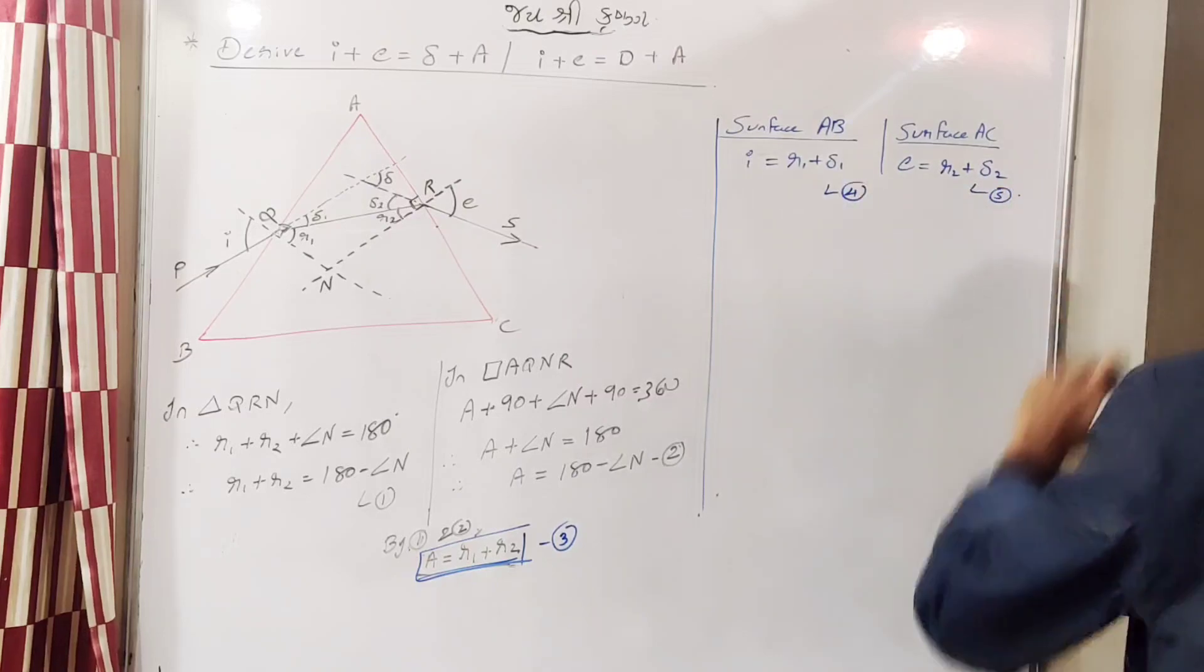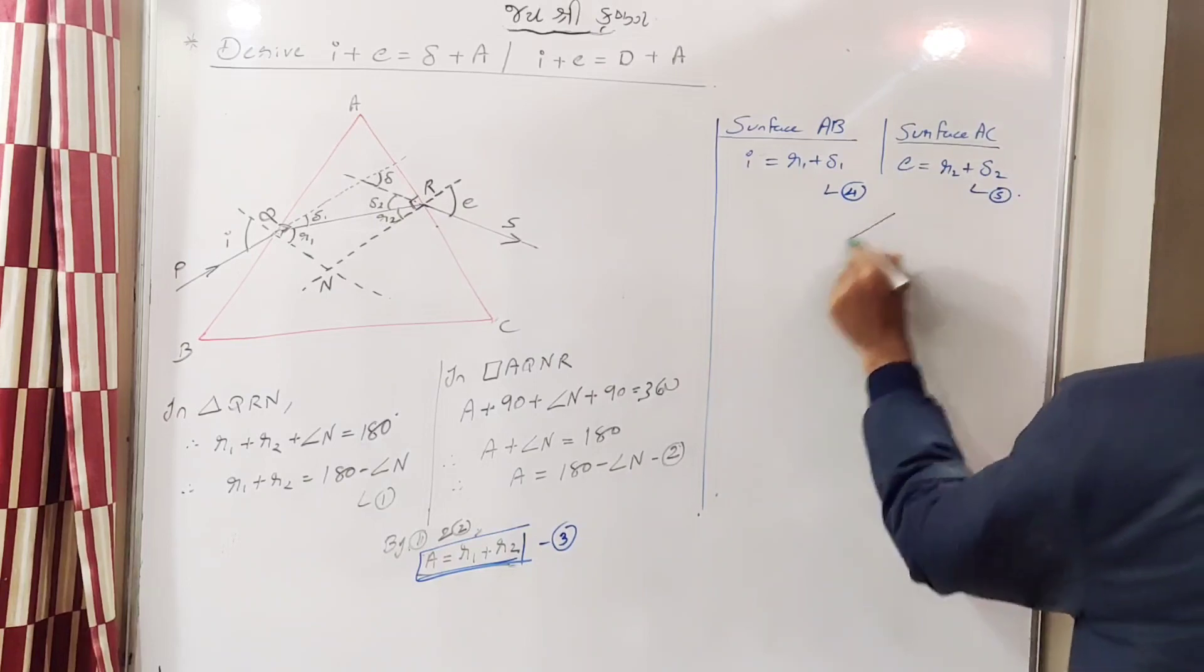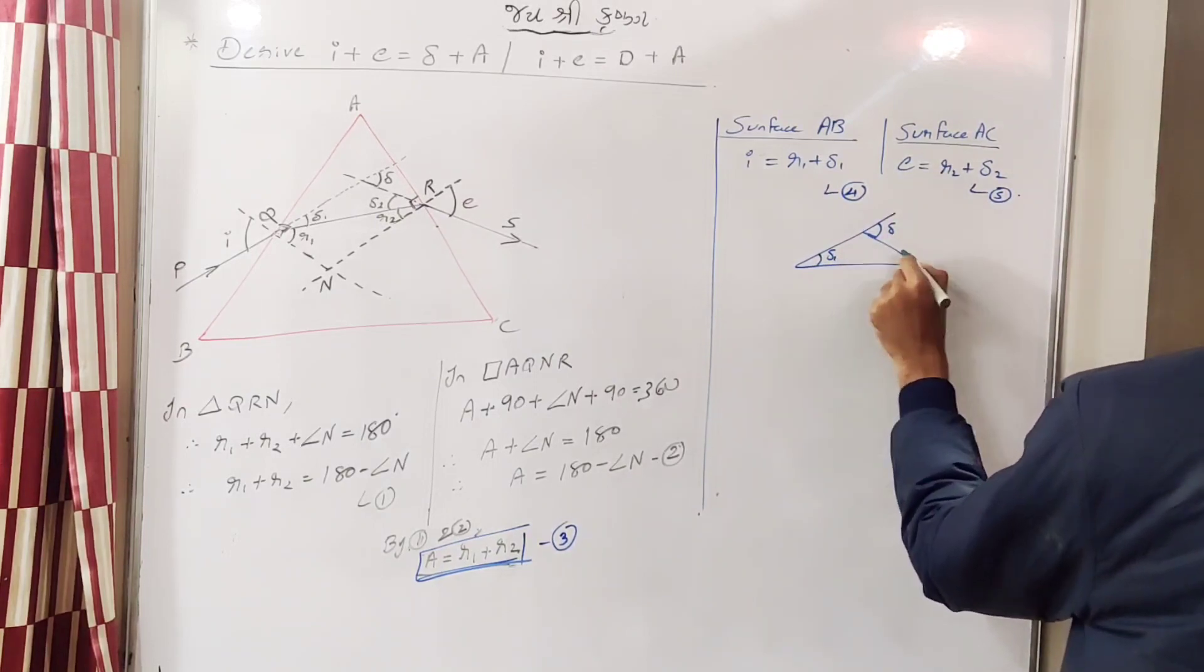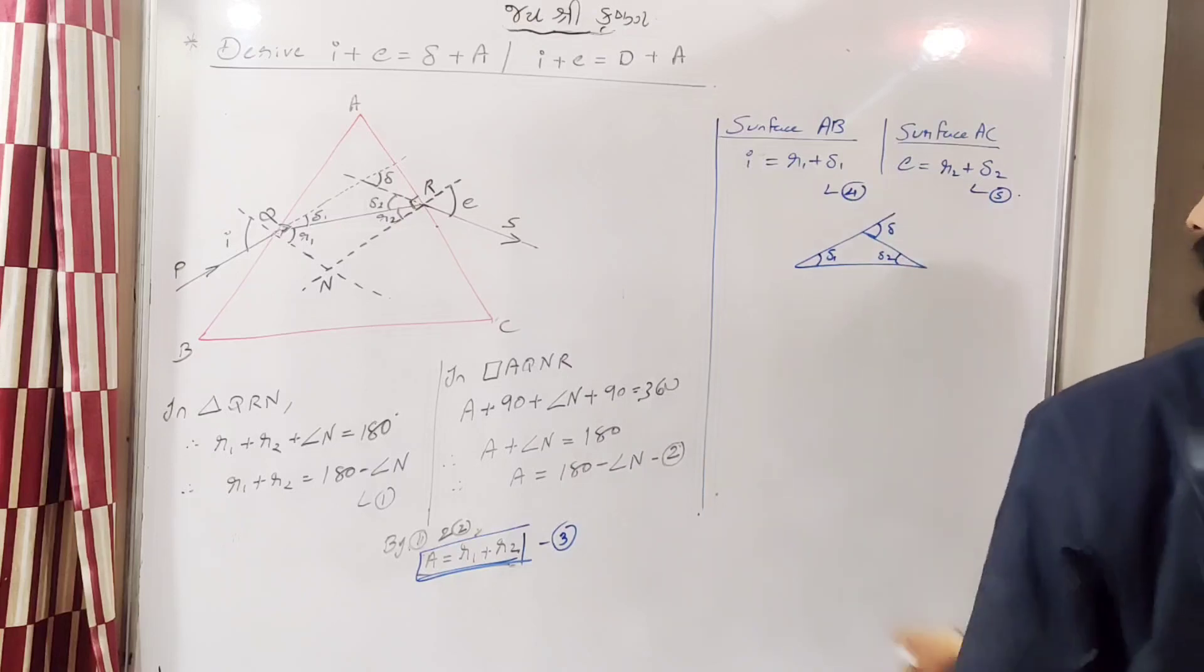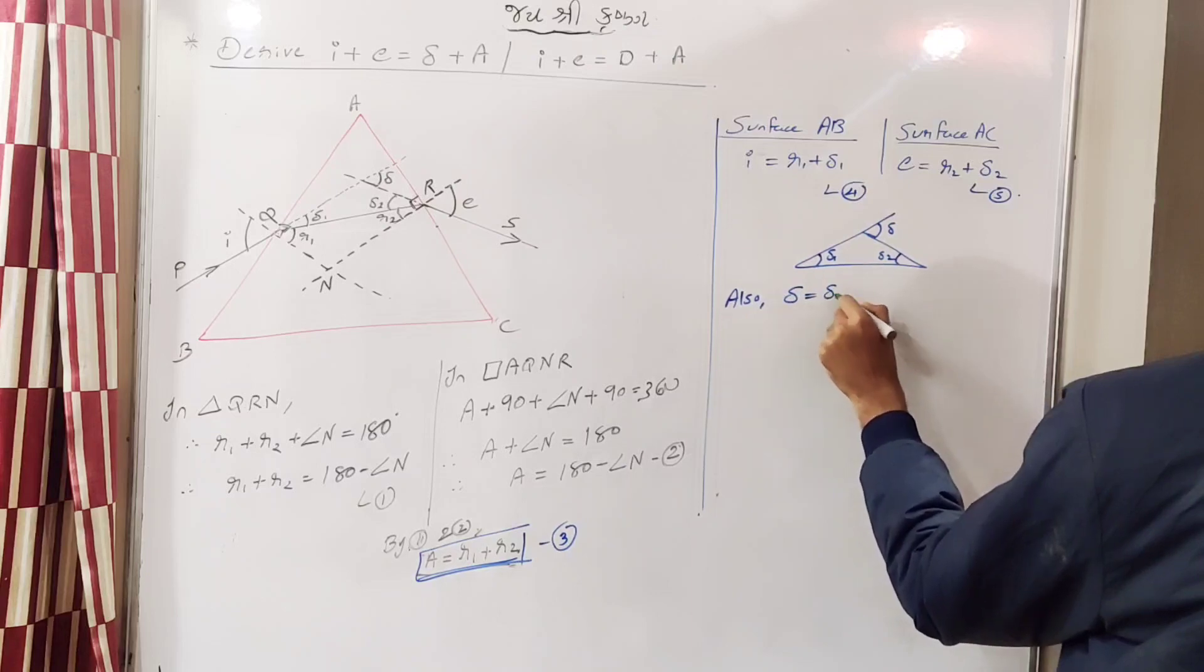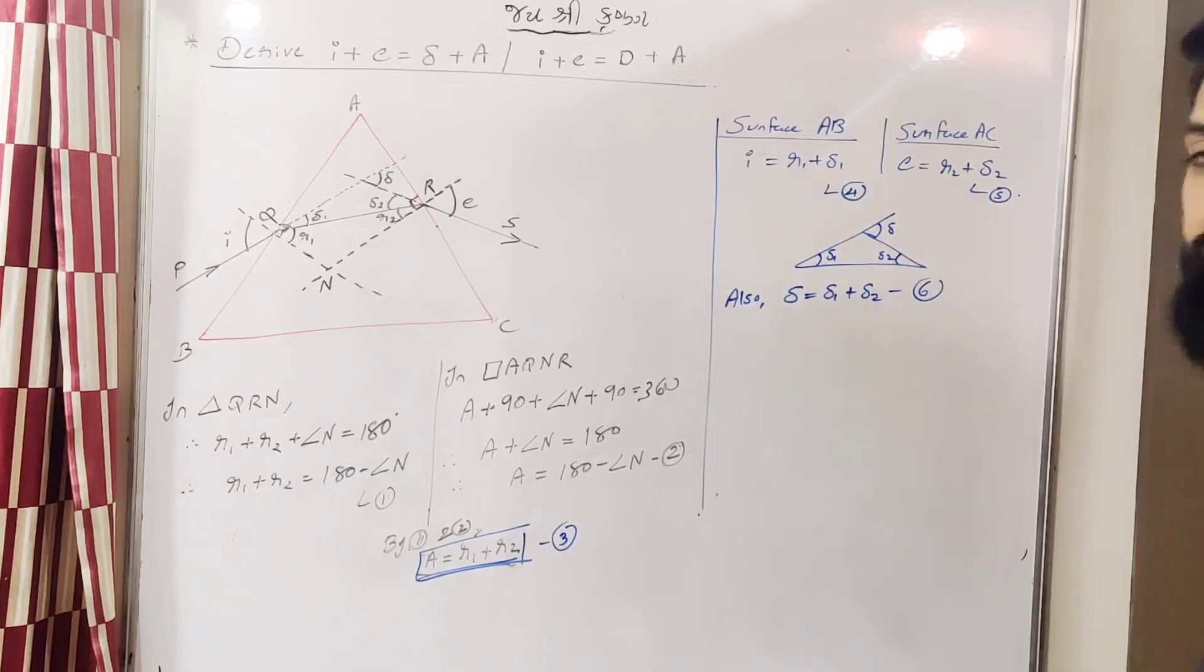This is 5. Now last thing, you can find here the triangle. Here you are having delta, this is delta 1, this is delta 2. So external angle property. Delta is equal to delta 1 plus delta 2. This is the sixth equation that you get.